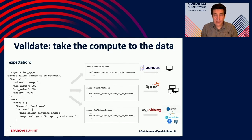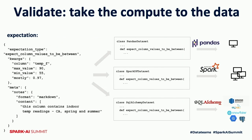When a new batch of data comes in, you validate it against this expectation. The declarative nature of an expectation allows the library to translate it into different compute engines: it can translate into pandas and validate a pandas DataFrame on one computer, into Spark and validate a DataFrame on a Spark cluster, or into SQL via SQLAlchemy and validate a table or query result in multiple databases.